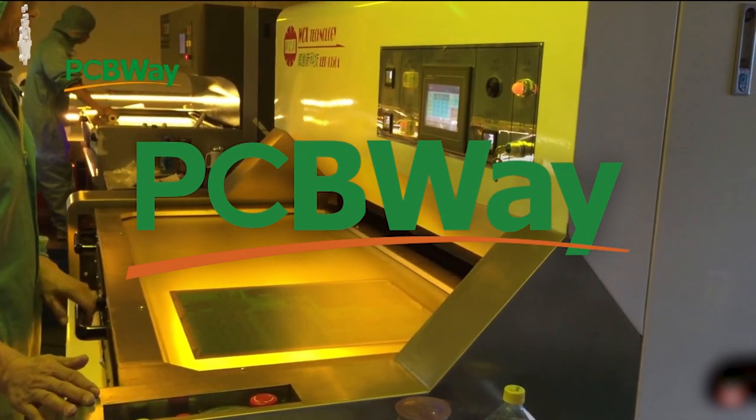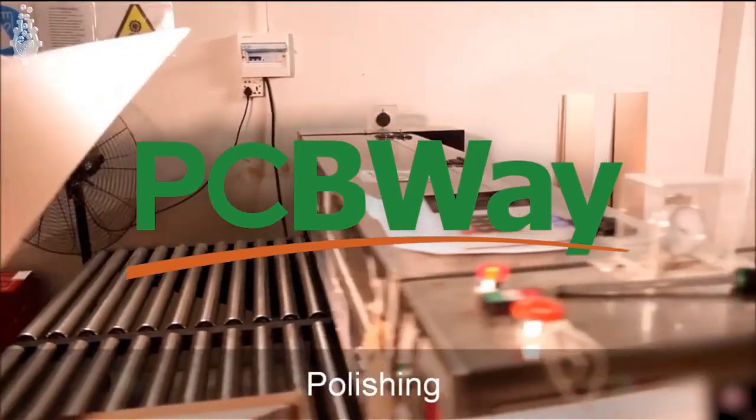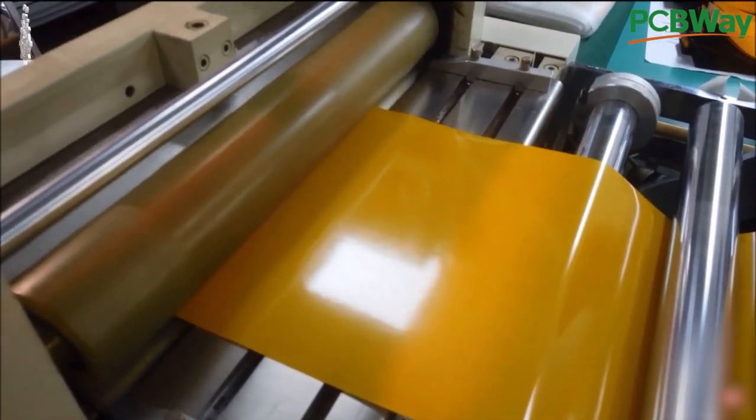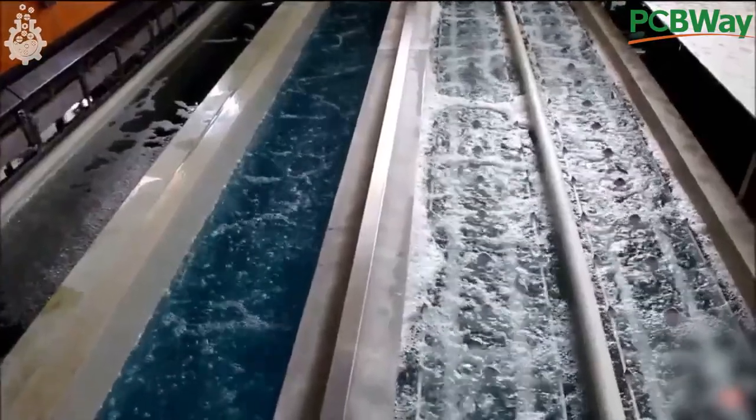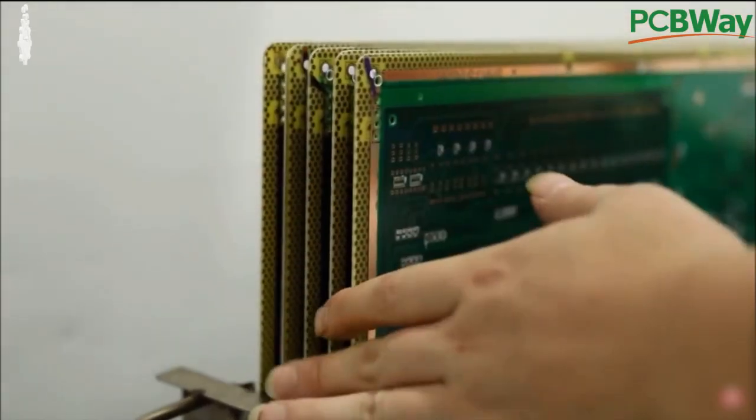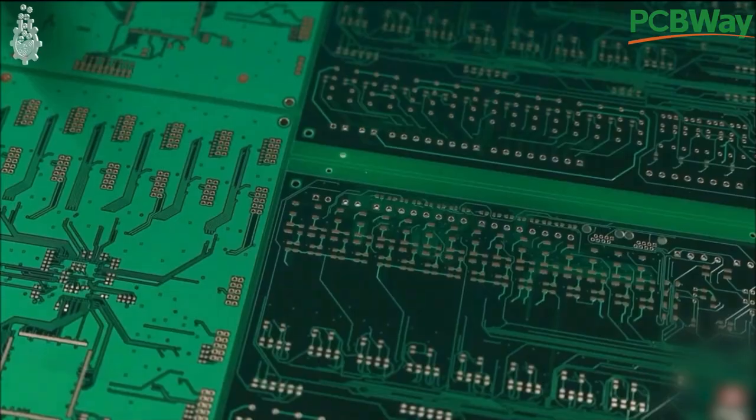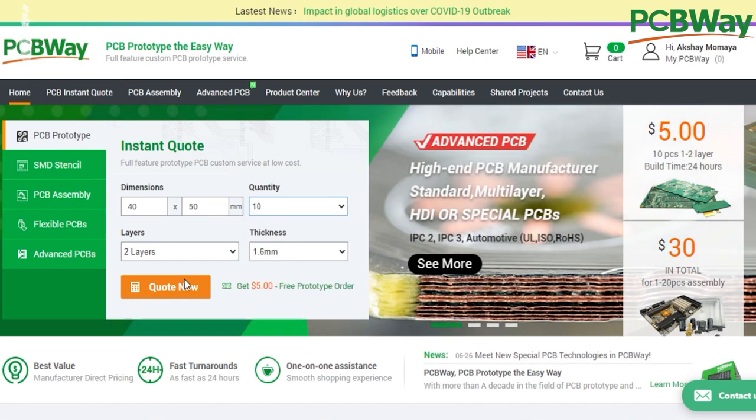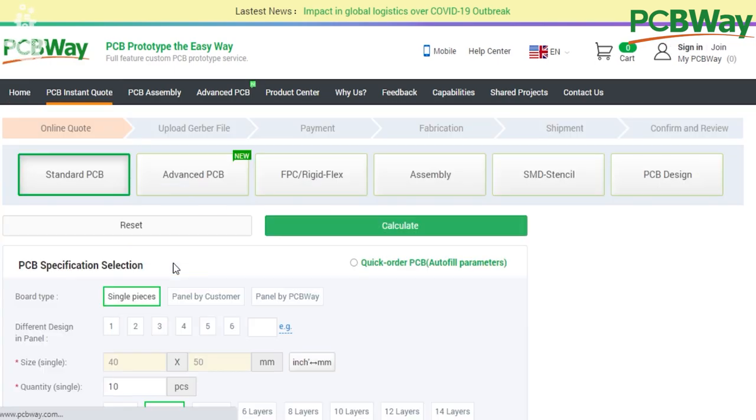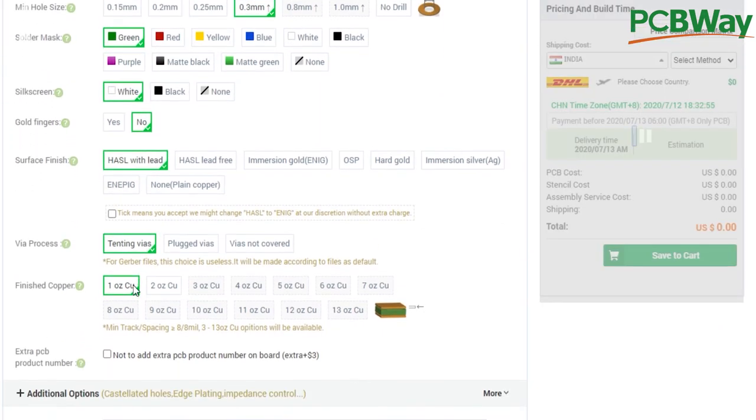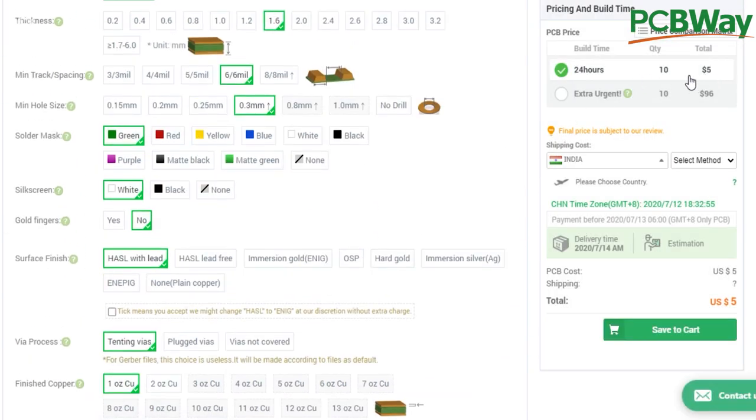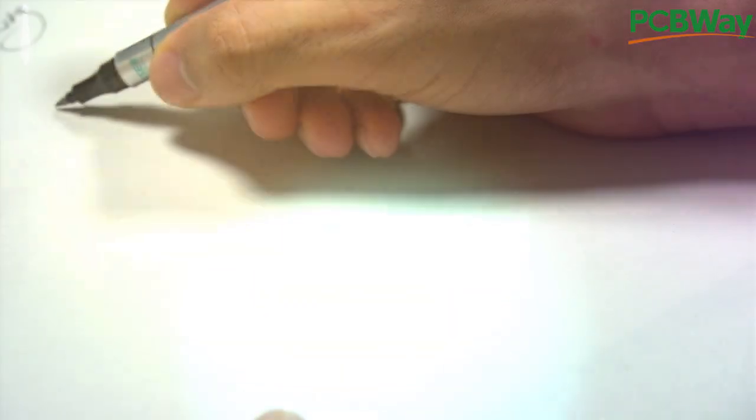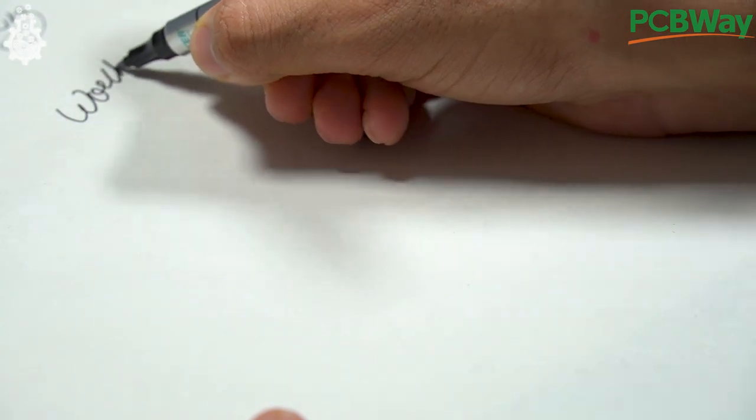This video is sponsored by PCBWay. A few facts about PCBWay: it is one of the best PCB manufacturers out there. They offer services like flexible PCB, advanced PCBs up to 30 layers, and PCBs for prototyping. Ordering a PCB from PCBWay is very simple, just like ordering from Amazon. Simply enter the dimensions of the PCB, which can be found on my blog page, keep all the other parameters as standard, and you can get 10 PCBs for five dollars, which is a great deal.